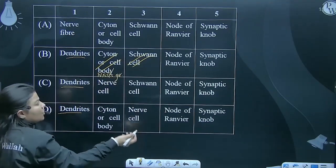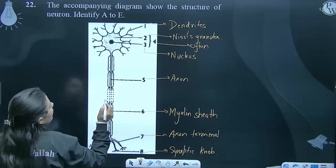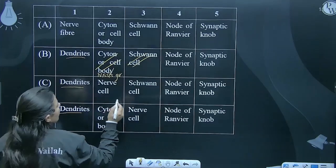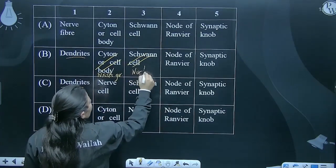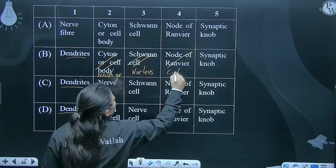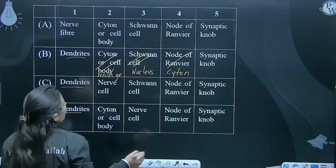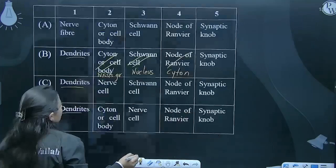Change it. Correction can happen in DCP also. Nissl granules. 3 is your nucleus and 4 is cyton. 3 is nucleus, and 4 is cyton. And 5 is axon.